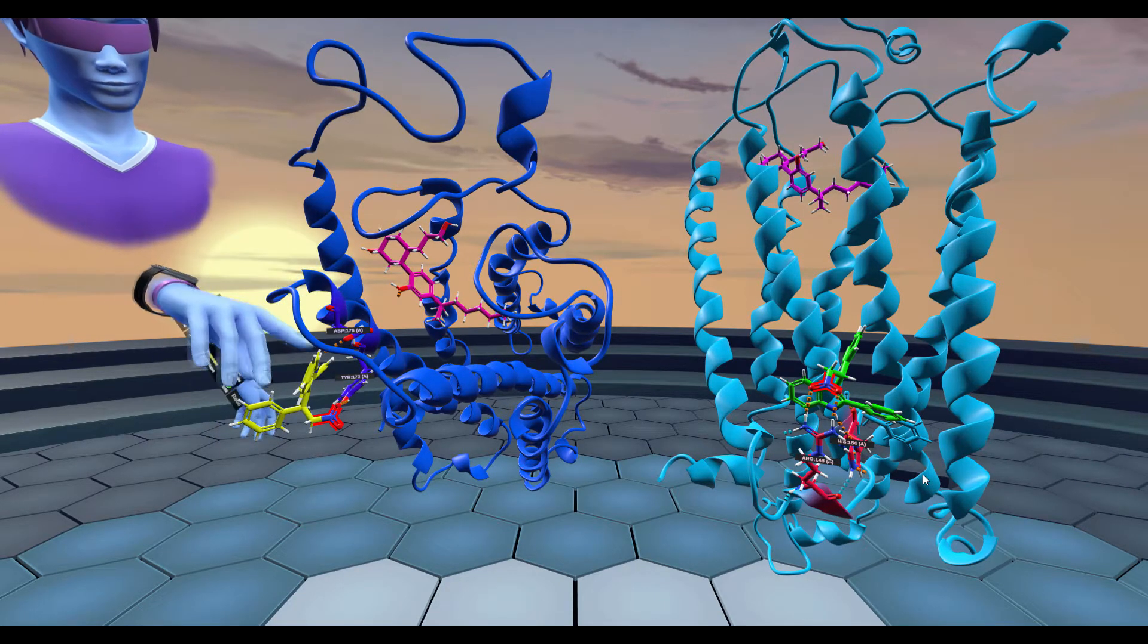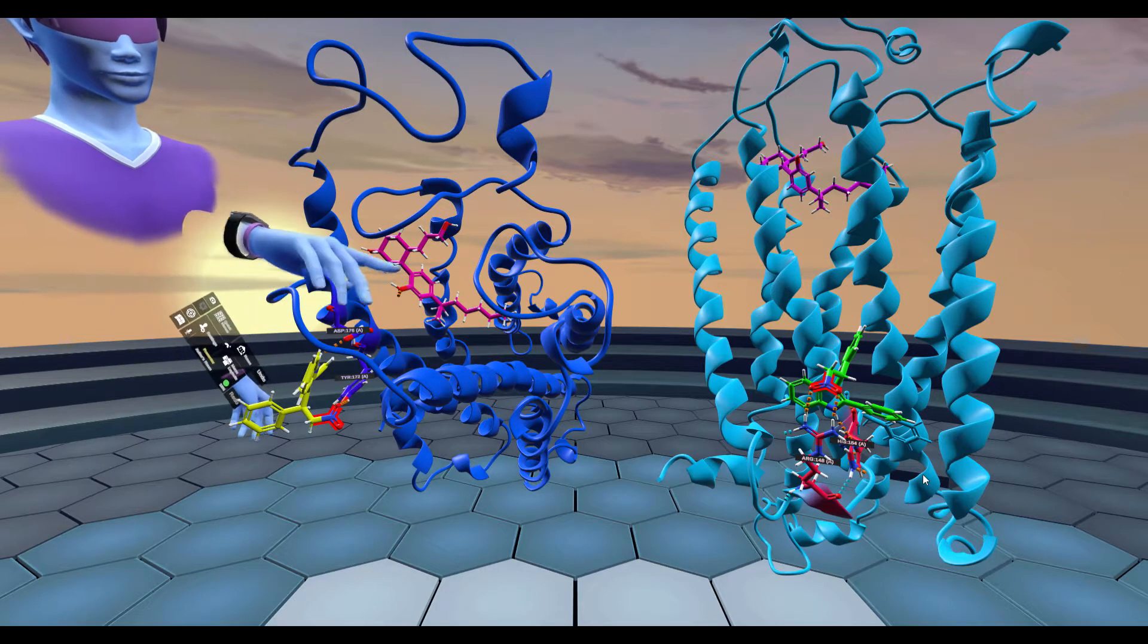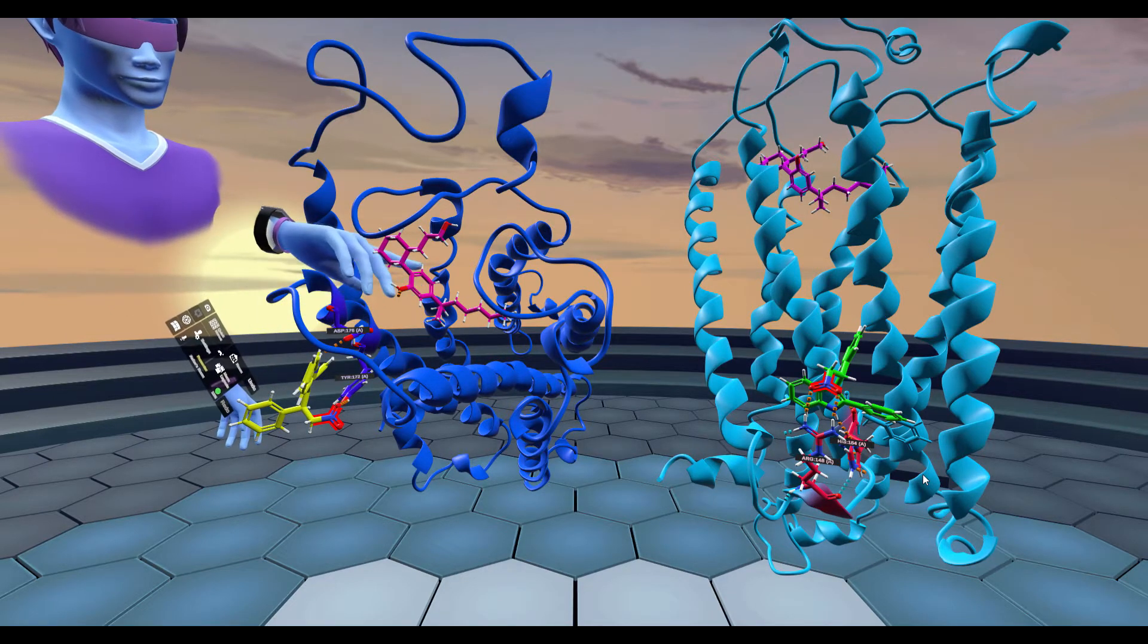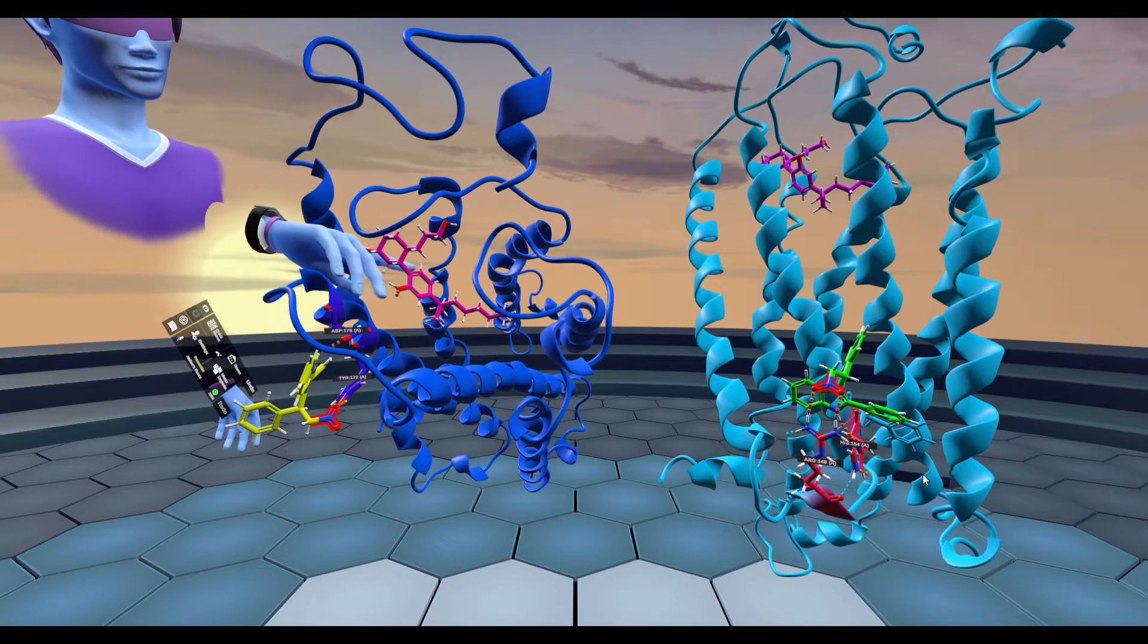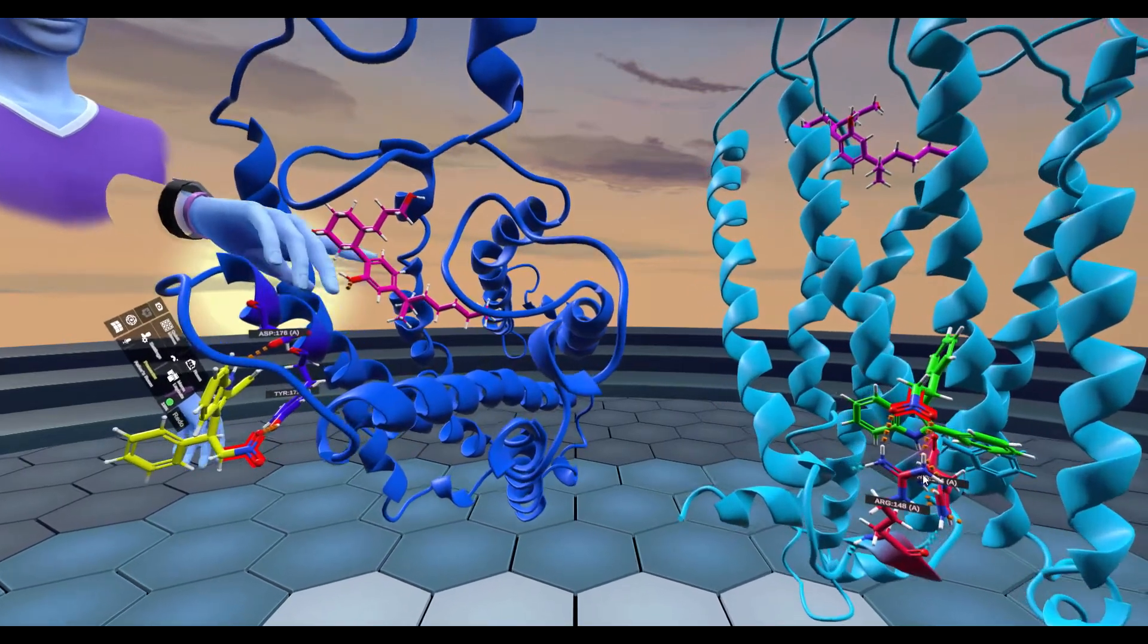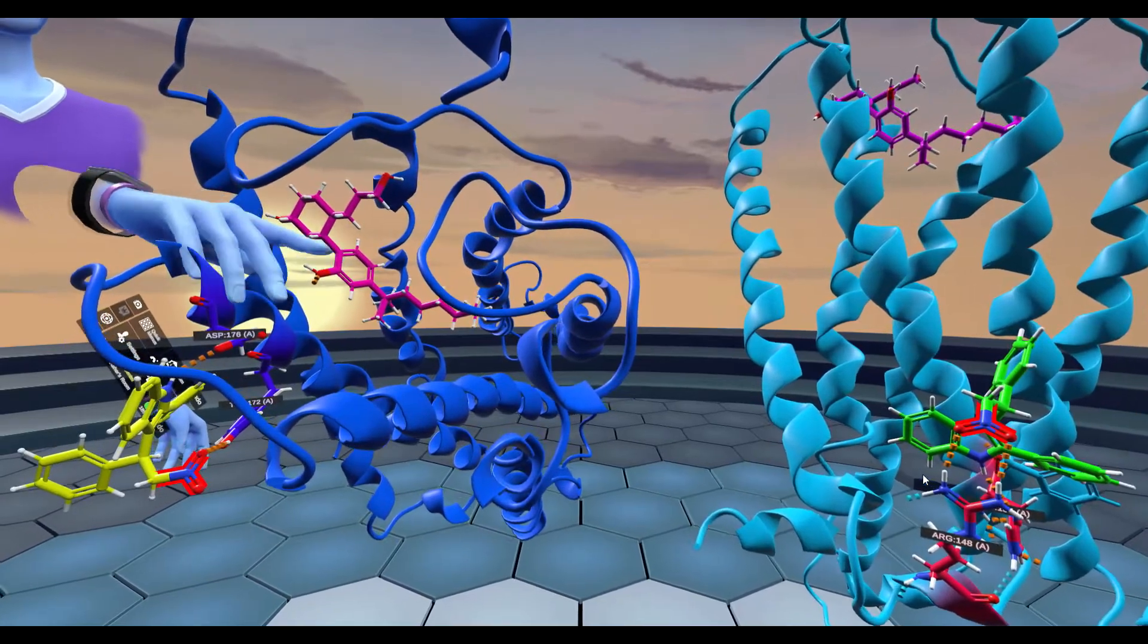So basically first the allosteric modulator in yellow binds, the shape of this site called an orthosteric site changes in such a way that it leads to higher affinity to this binding site, and we call that a positive allosteric modulator in magenta.